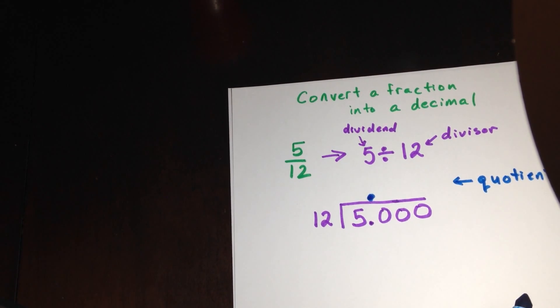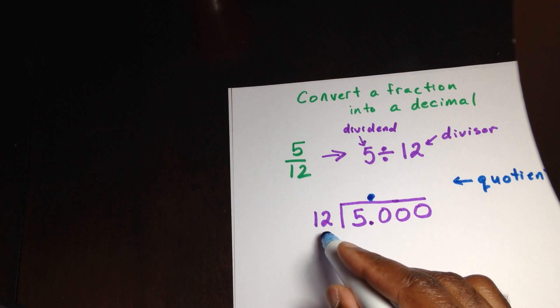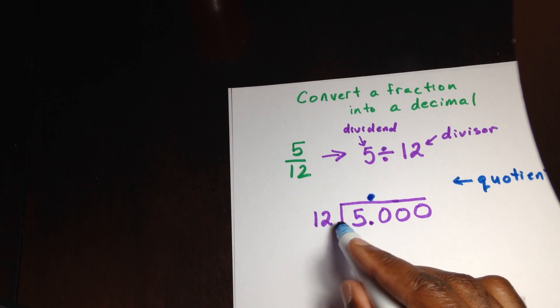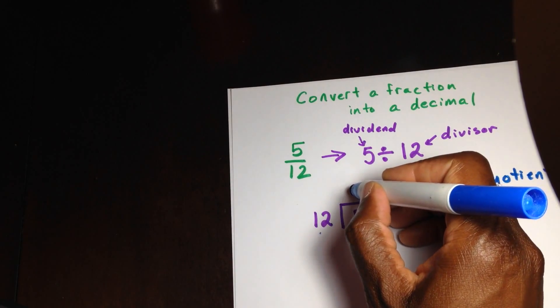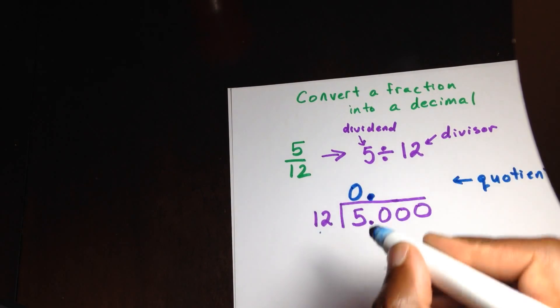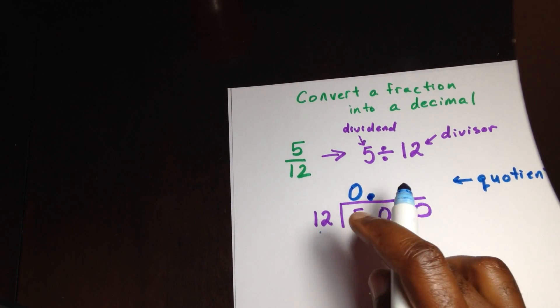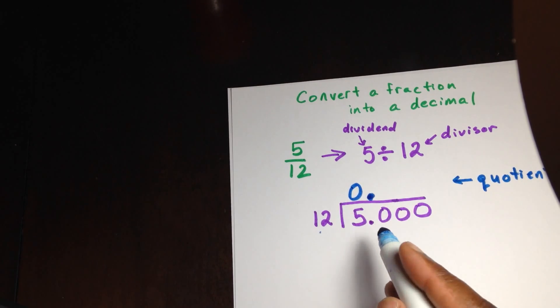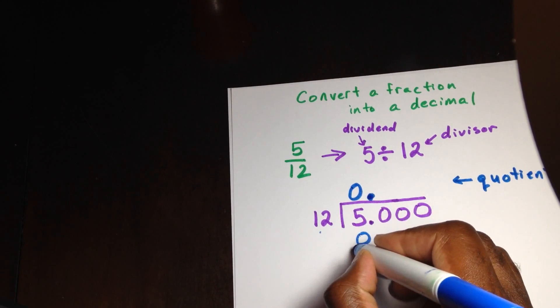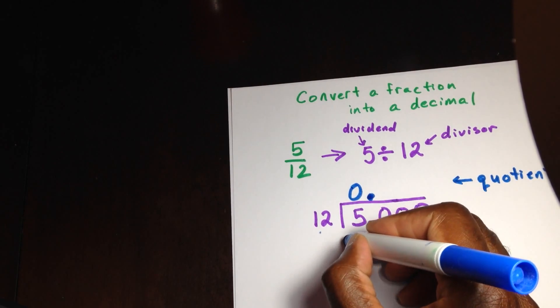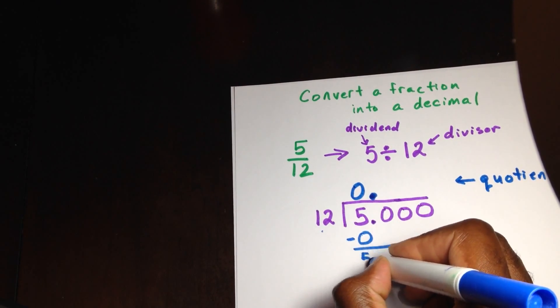So let's begin doing the division. Now, when you have to divide 12 into 5, we see 12 won't go into 5. So this will be 0. Now, act like this decimal is not here anymore. So now when you do the math, it will be 0 times 12, which is 0. And you subtract, get 5.